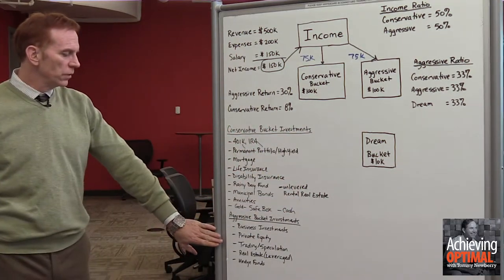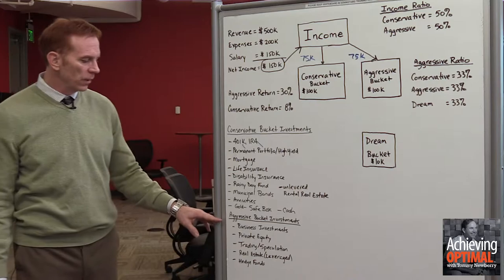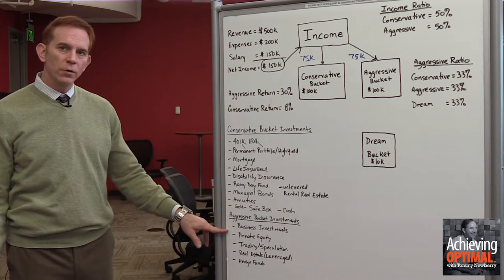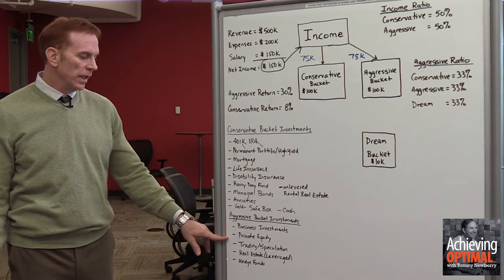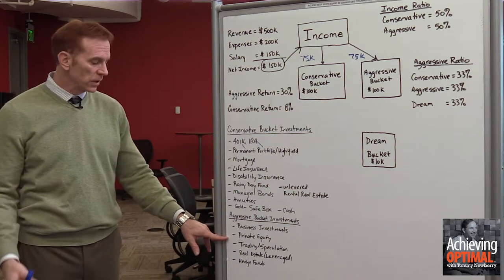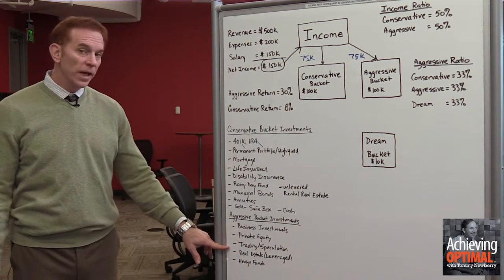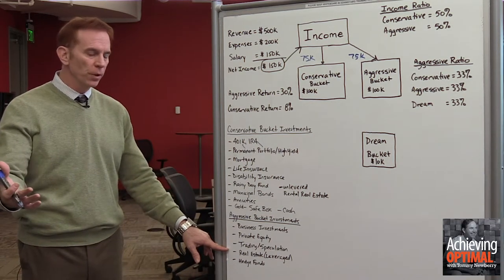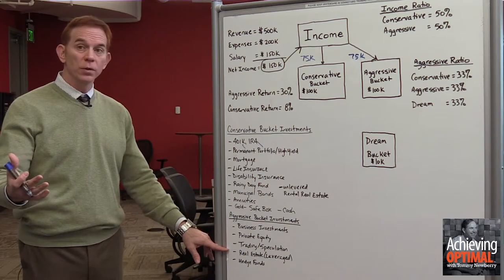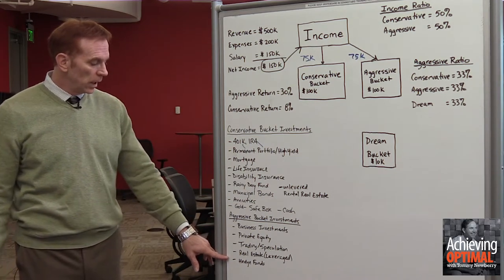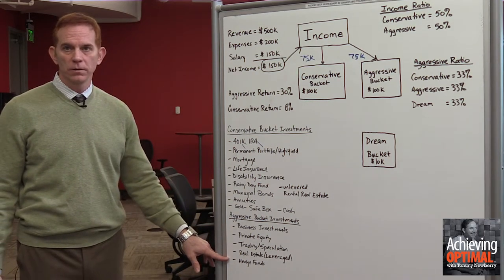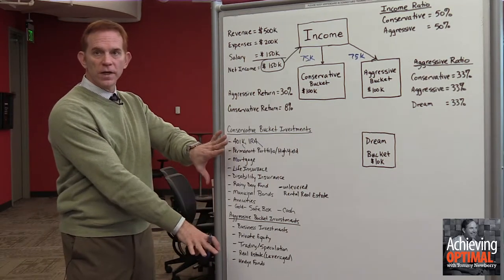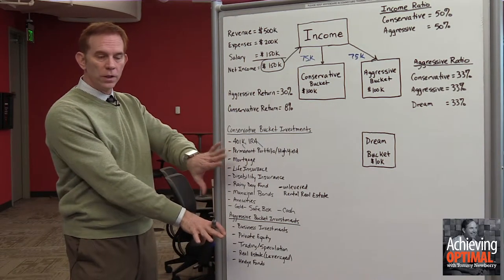Then we go down to the aggressive bucket. In the aggressive bucket, we have things like investing in other businesses, private equity funds, trading or speculation, and leveraged real estate — where you'd buy commercial real estate or apartment buildings using loans. Also, hedge fund investments. This gives you a flavor of how different these investments are and a sense of what could go in each of these buckets.